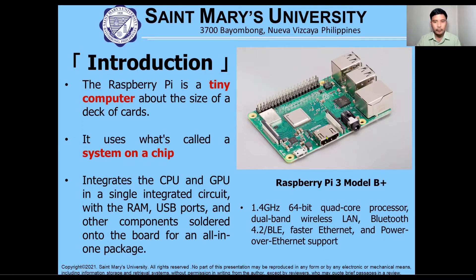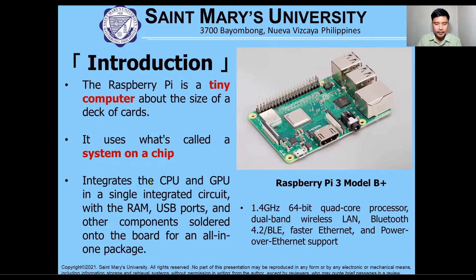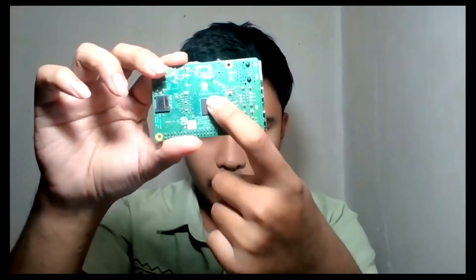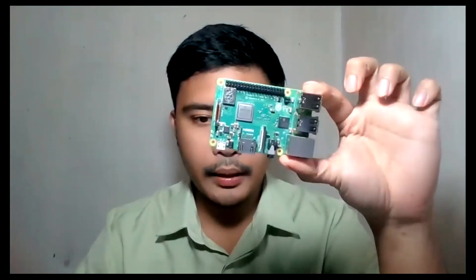The Raspberry Pi uses what's called a System on Chip. The basic principle is that it integrates the CPU — the Central Processing Unit — and the GPU — the Graphics Processing Unit — into a single integrated circuit. It also includes RAM and USB ports. The RAM chip is located on the front of the board; I can point to it right here on this Raspberry Pi.